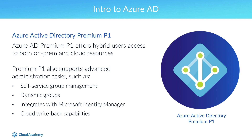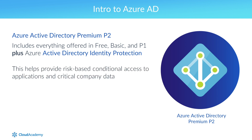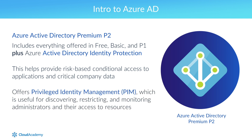Azure AD Premium P1 also offers cloud write-back capabilities, which are used to allow self-service password reset for your on-prem users. Azure Active Directory Premium P2 builds upon what is offered in the P1 edition by offering everything included in the free, basic, and P1 versions, plus Azure Active Directory Identity Protection, which helps provide risk-based conditional access to applications and critical company data. Azure AD Premium P2 also offers privileged identity management, or PIM, which is useful for discovering, restricting, and monitoring administrators as well as their access to corporate resources.